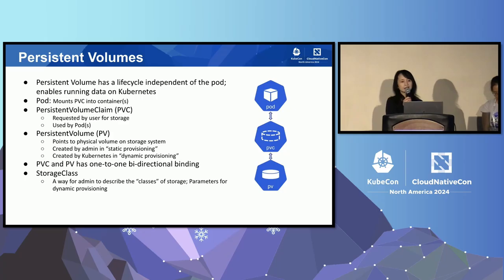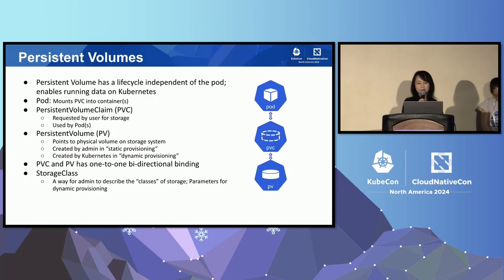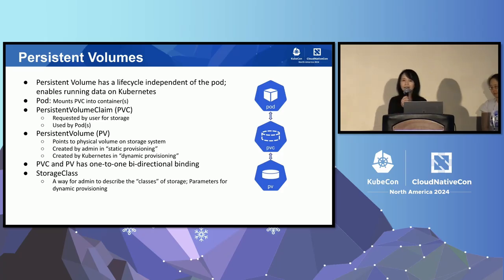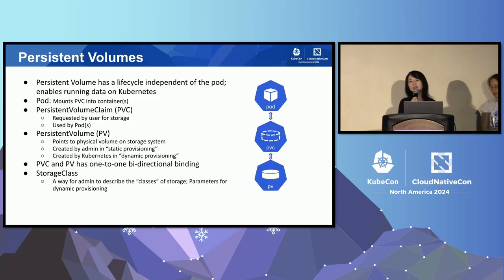PVC is in the user namespace — it represents a user's request for storage. PV is in the cluster scope — it represents a resource under a storage system. PVC and PV have a one-to-one mapping to each other. A storage class defines the classes of storage defined by the admin, and different storage classes can map to different quality of service levels or other policies.